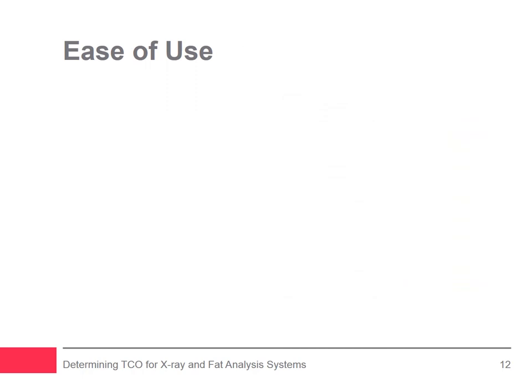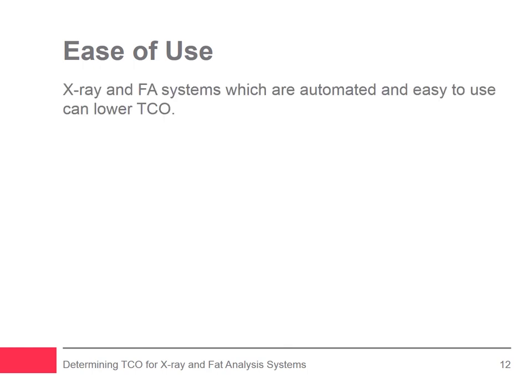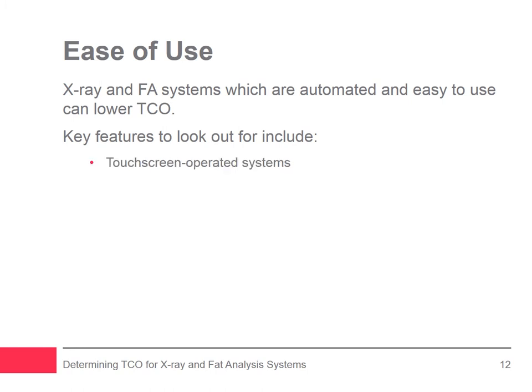The sixth variable is ease of use. Ease of use impacts the life and cost of an X-ray or FA system, especially in harsh environments where sanitation is pivotal. By making systems easier for operators to use, labor hours can be saved over time, thus contributing to TCO goals. Features designed for greater ease of use include touchscreen-operated systems, which allow operators to easily and intuitively interact with an X-ray or FA machine without the need for long changeovers and unnecessary downtime.